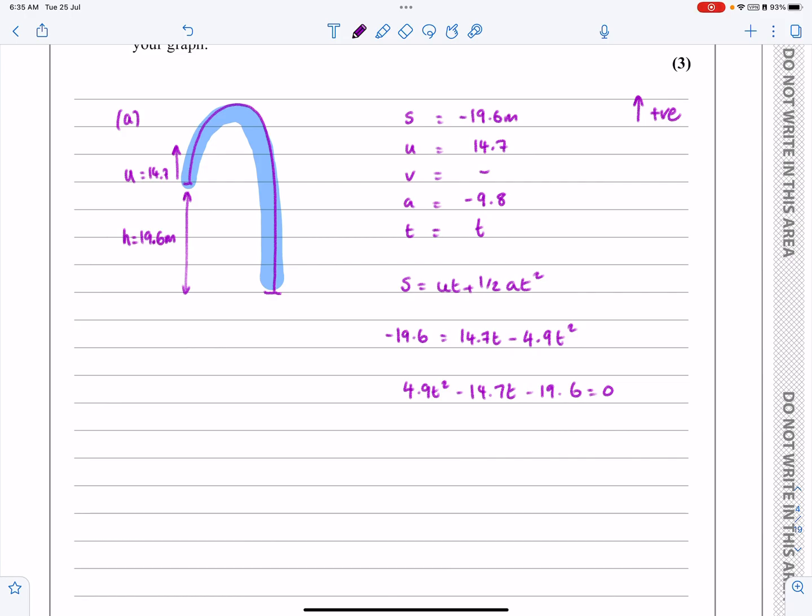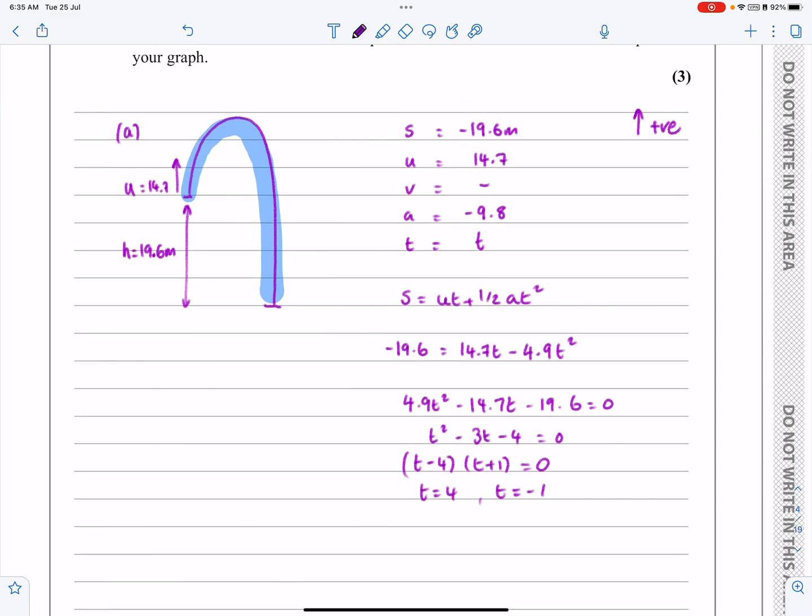It does actually factorize because 4.9 actually comes out of all of those. Now, I wouldn't expect you guys to see that. I'd expect you to probably use the formula. But if you didn't and you factorized using 4.9, dividing by 4.9, we actually end up with that. But you can still use the formula. It will still work out. I'm going to get T minus 4, T plus 1 equals 0 here. So I'm going to get T equals 4 or T equals minus 1.